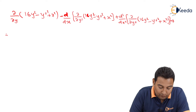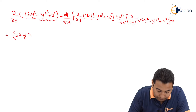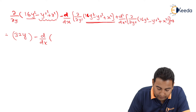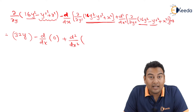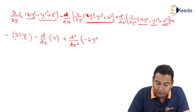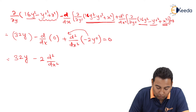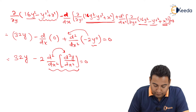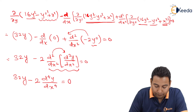Simplifying: with respect to y, 16y² gives 32y, and the y'' constant gives 0. There is no y' term so that derivative is 0. Inside d²/dx², with respect to y'', minus y''² gives minus 2y''. Taking minus 2 outside, we get d²/dx² of y'' which is d⁴y/dx⁴ equal to 0.